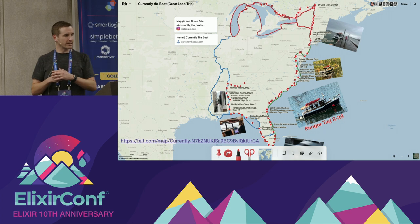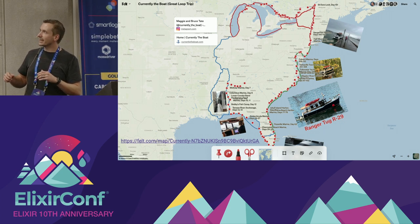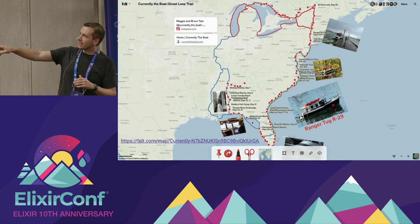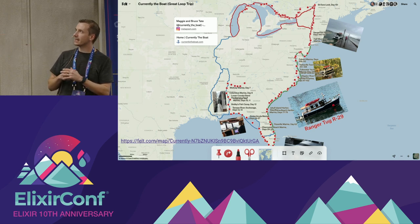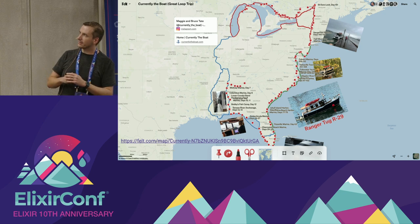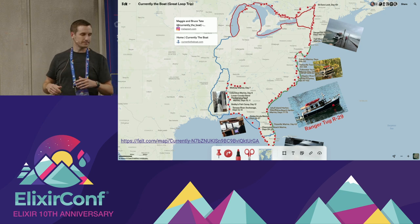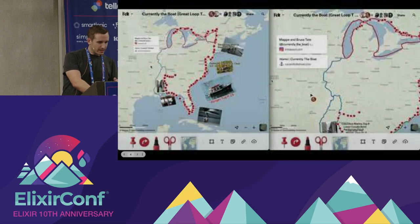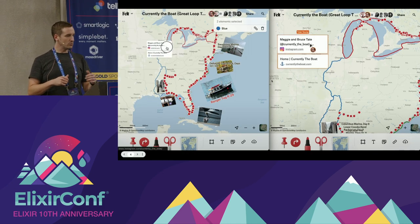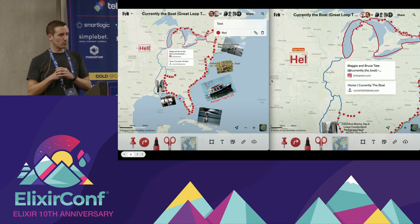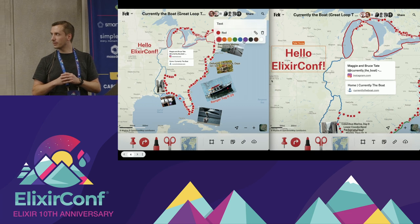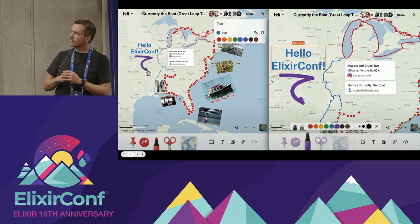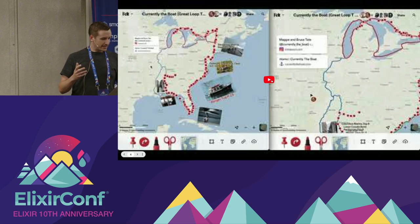This is a little example map that I built — Bruce and Maggie Tate's great loop journey. They're taking a boat trip around the eastern half of the U.S. The red dots are the points at which they stopped, there are line drawings of the path they had planned, and there are links and images. All of this can be collaboratively edited. Here I've got two panes and the person on the right is watching the other person make changes, and then in the right window we're going to go make some changes as well. All of this happens in real time.